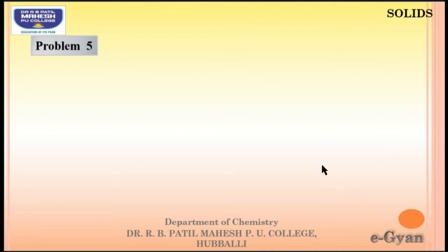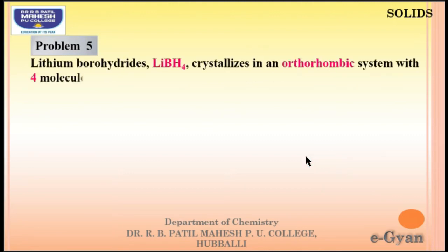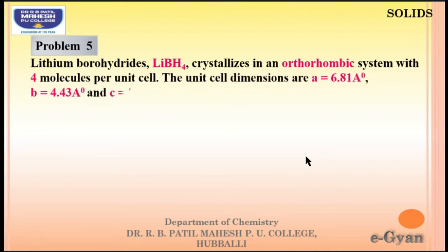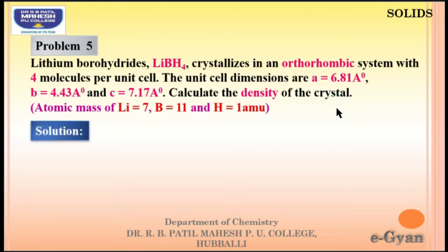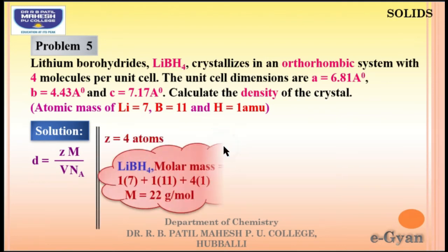Next numerical: lithium borohydride (LiBH₄) crystallizes in an orthorhombic system with 4 molecules per unit cell (Z = 4). The unit cell dimensions are A = 6.81 Å, B = 4.43 Å, C = 7.17 Å. Calculate the density of the crystal. Atomic masses: Li = 7, B = 11, H = 1. The molecular mass of LiBH₄ = 7 + 11 + 4×1 = 22 g/mol.